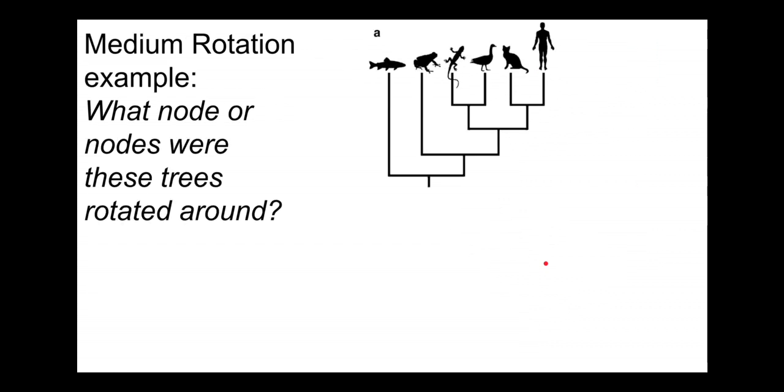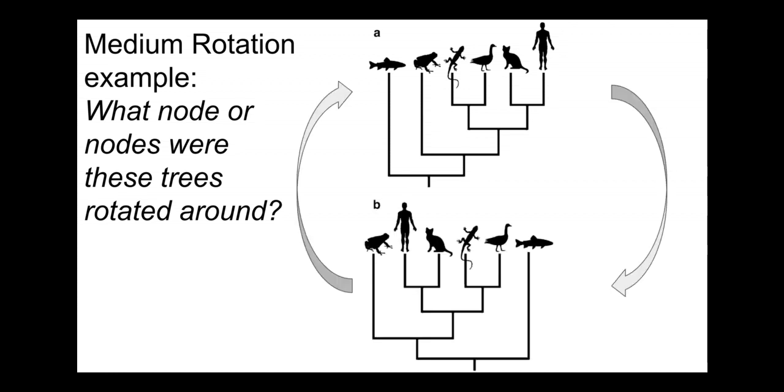Here's a slightly harder example. What node or perhaps nodes are used to convert these two trees? How do we go from this tree here down to the one on the bottom where we move cats and humans inside? Stop the video and think about that for a second.